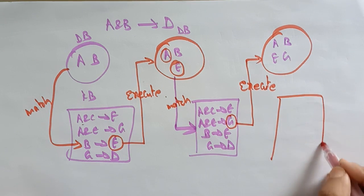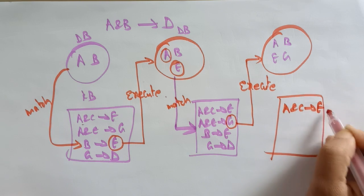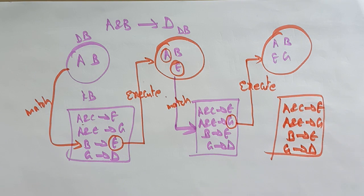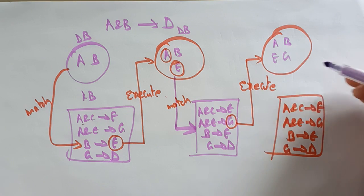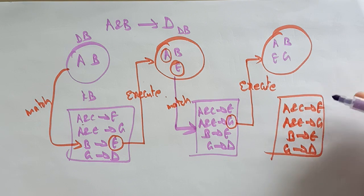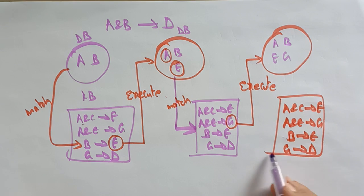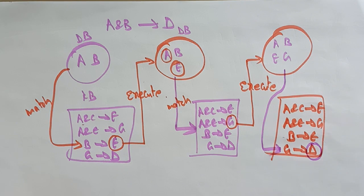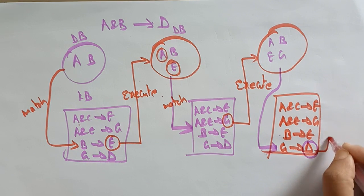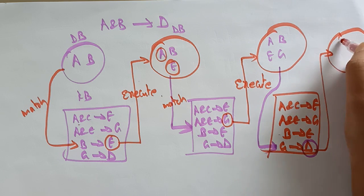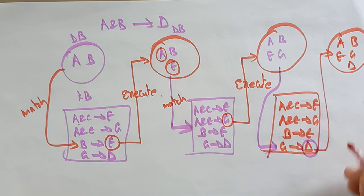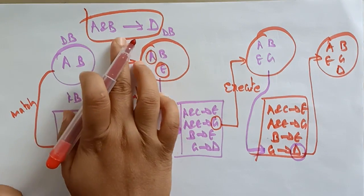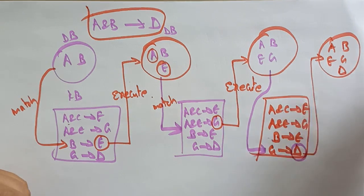Now again match the knowledge base: A and C implies E; A and E implies G; B implies E; G implies D. Single A is not there, A and B is not there, single E is not matching. But single G is there — G matches G implies D in the knowledge base. So execute D into the database. Now the database contains A, B, E, G, and D. Did we reach the goal? Yes, we reached the goal. We proved that if A and B are true then D is also true.